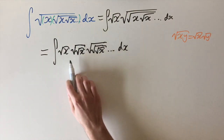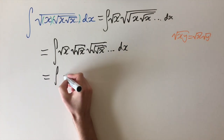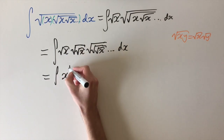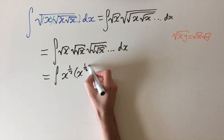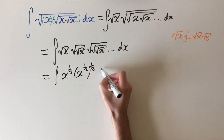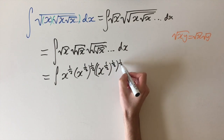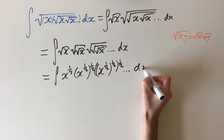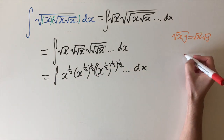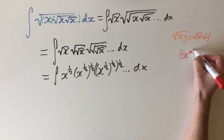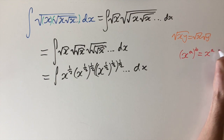Now let's write this in terms of indices to make it a little clearer. This is the integral of x, where the square root of x is x to the power of a half. The second term is x to the power of a half, and that to the power of a half. The third term has three square roots, so it's a half to the power of a half to the power of a half, and this carries on until infinity. To simplify, we use the law of indices: if we have x to the power of a, all to the power of b, we can multiply the indices, giving x to the power of a times b.